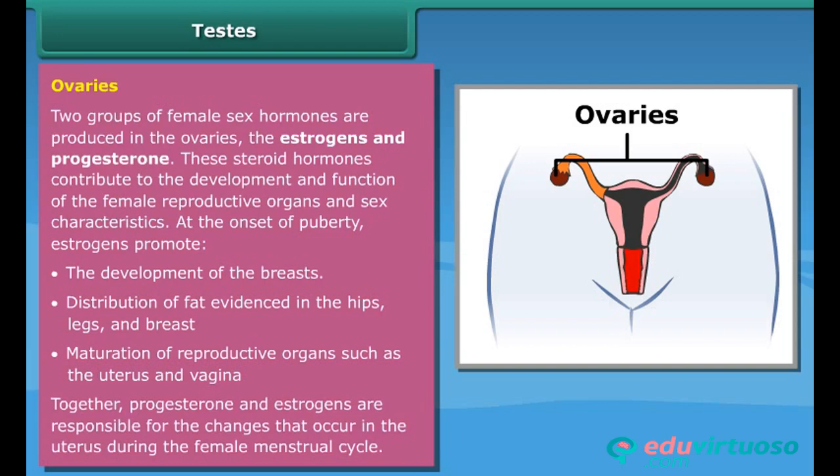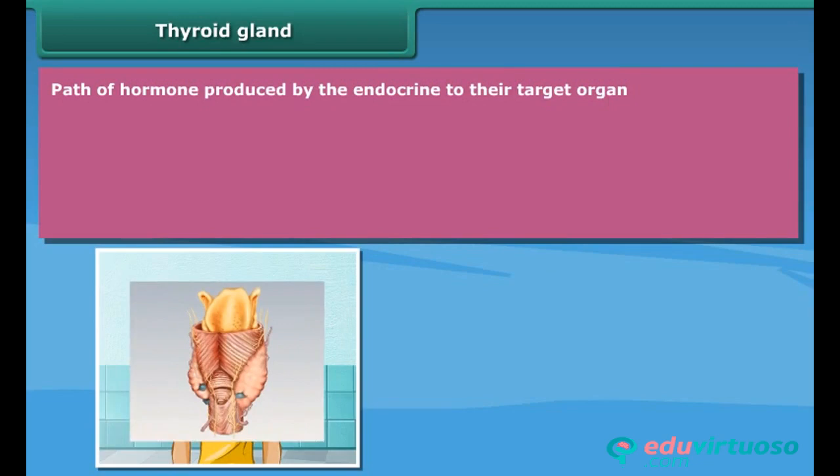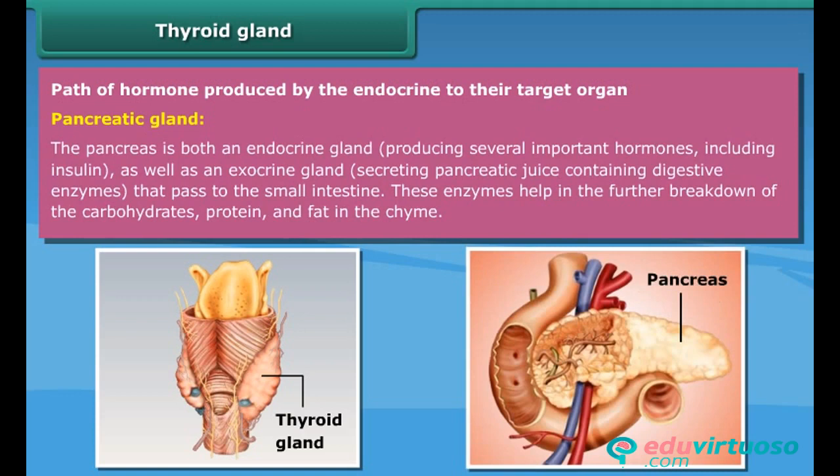Together, progesterone and estrogens are responsible for the changes that occur in the uterus during the female menstrual cycle. The pancreas is both an endocrine gland — producing several important hormones including insulin — as well as an exocrine gland, secreting pancreatic juice containing digestive enzymes that pass to the small intestine.